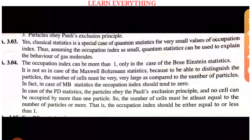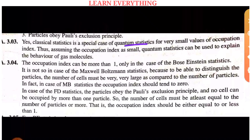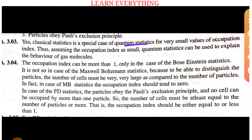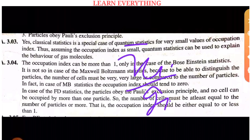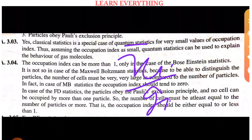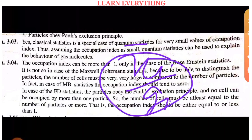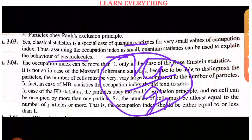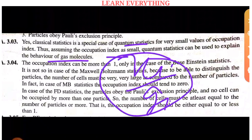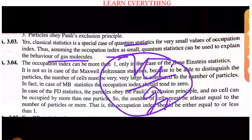Classical statistics is a special case of quantum statistics. It applies for a very small value of the occupation index. When the occupation index is small, quantum statistics reduces to classical statistics, which can explain the behavior of gas molecules.